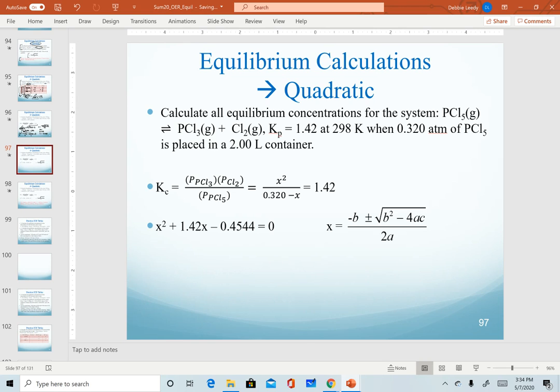And so x, you'll always get two solutions, right? Your highest order will tell you the number of solutions. We get a negative 1.689 or a 0.269. And so we have to evaluate which one is the correct answer.